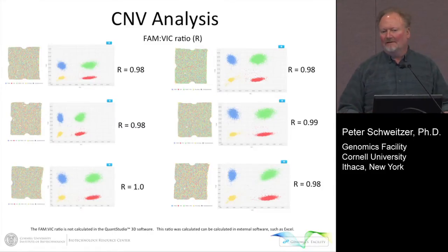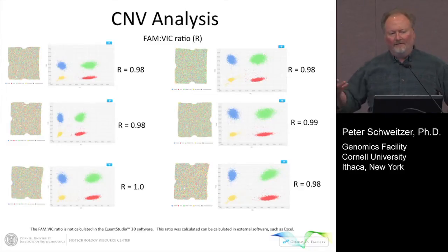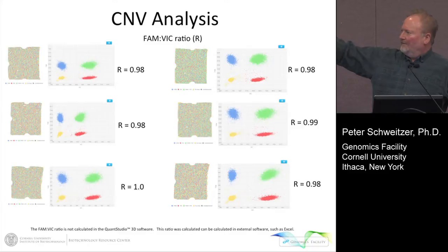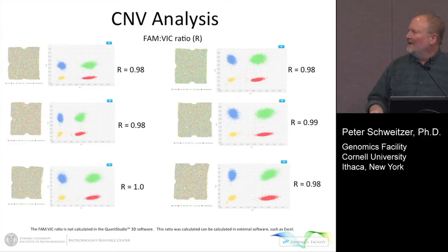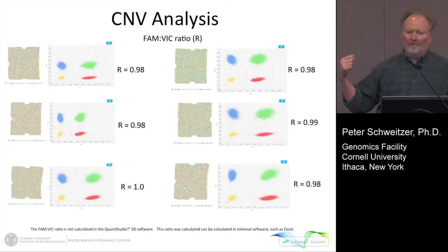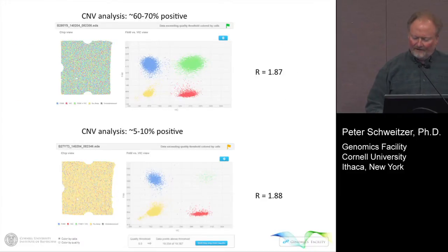Just briefly, because I want to get to the next generation sequencing quantifications — this instrument is terrific for copy number variation. We've been doing some copy number variation studies up in Ithaca, and this is a small part of a 17-panel DNA set looking at a single copy gene. We're looking at this as relative quantitation, expressing the TaqMan assay for FAM versus the TaqMan assay for VIC — FAM is on the y-axis, VIC is on the x-axis — and we just look at the ratios. Out of 17 samples, the variation among them was about 6% across all these ratios.